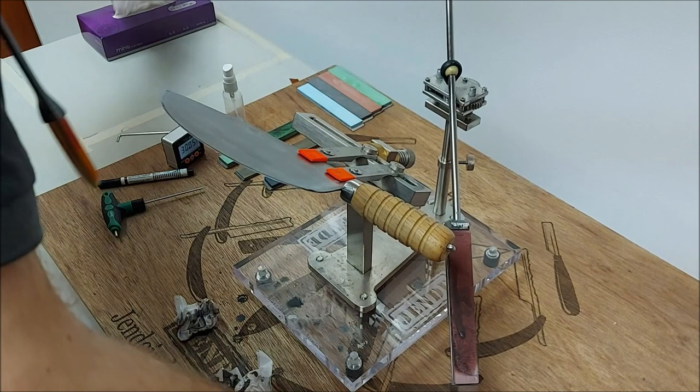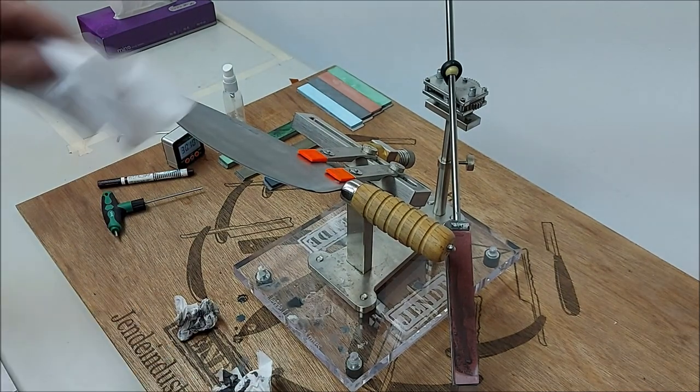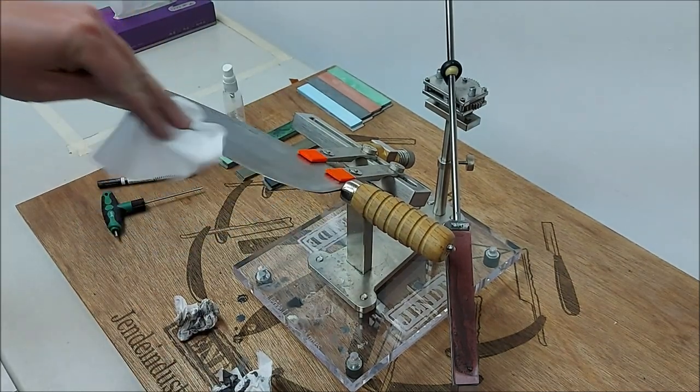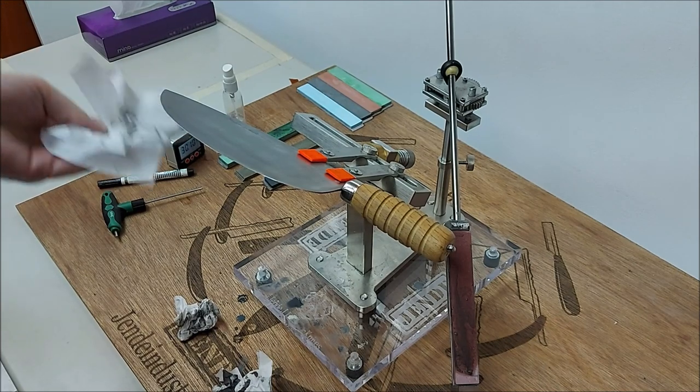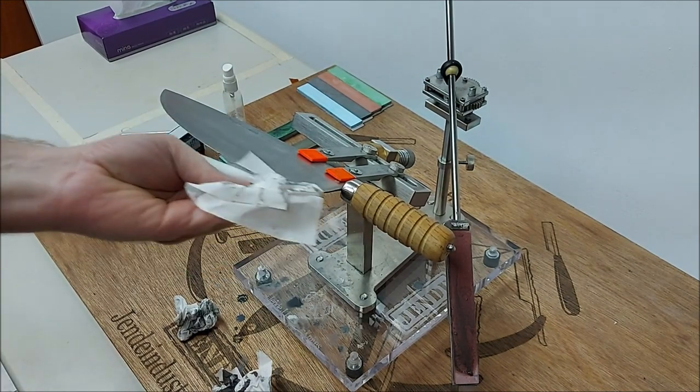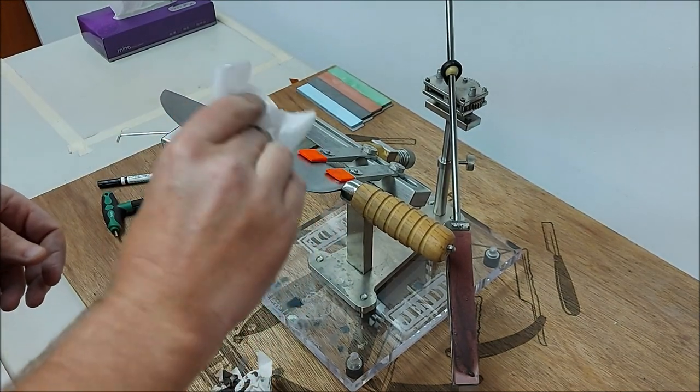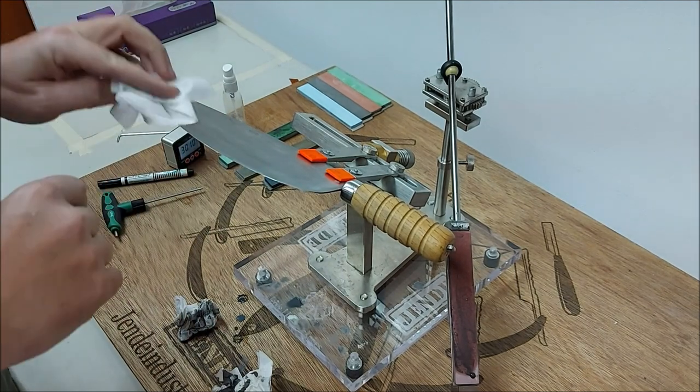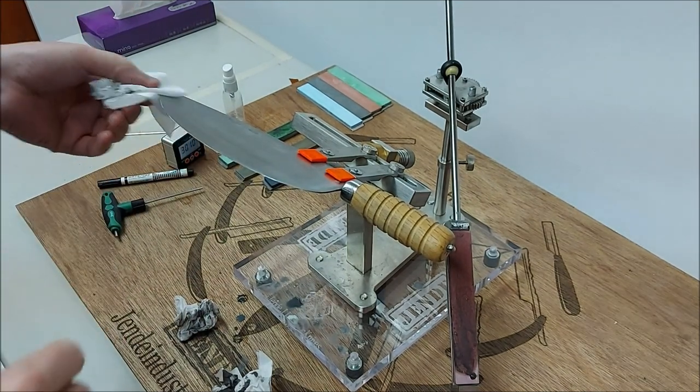Technically we are done, but you can continue on to higher grits after this. The sky's the limit. It's all the same, basically. Just keep going, feel for that burr, make sure you're hitting your angles, and at the end do that little pyramid and come down to one stroke per side. I'm going to get some paper and cut that real quick.